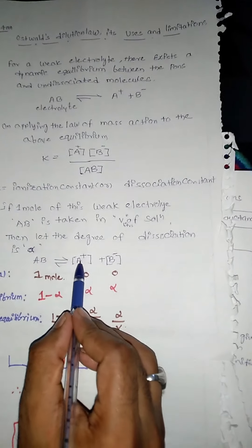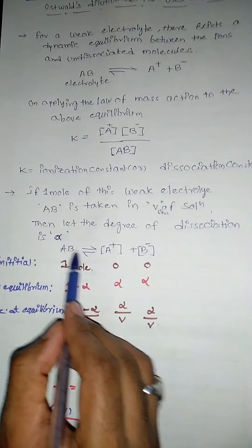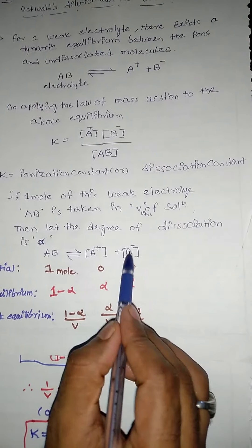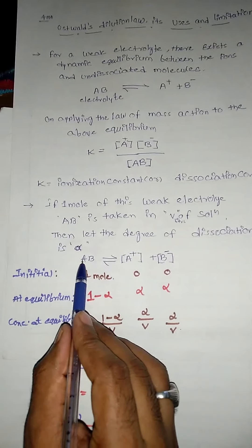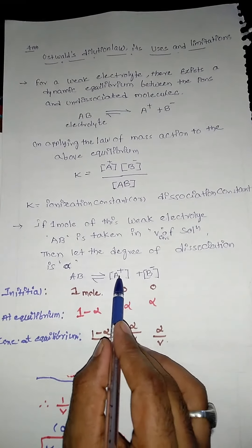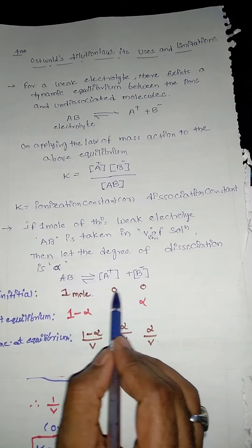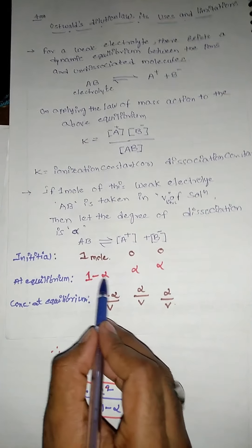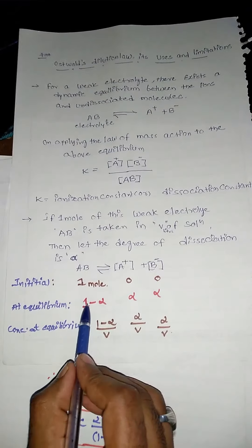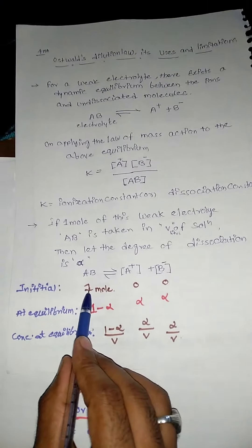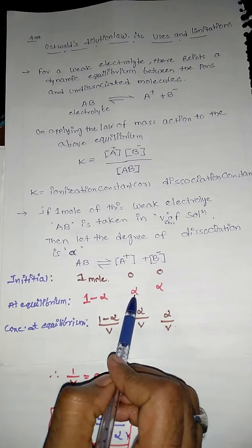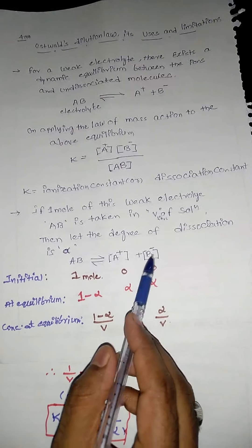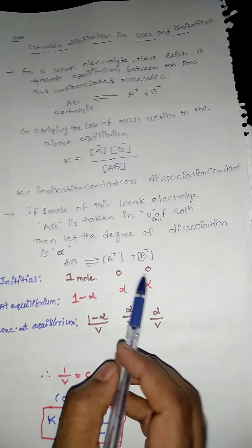For the reaction AB ⇌ A⁺ + B⁻, at the initial state, AB = 1 mole and cations and anions are 0. At equilibrium, AB = 1 − α, cations A⁺ = α, and anions B⁻ = α.